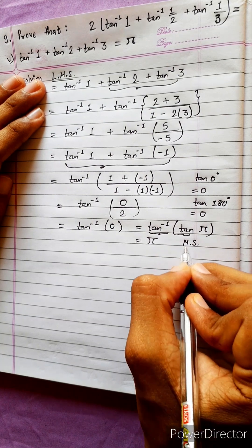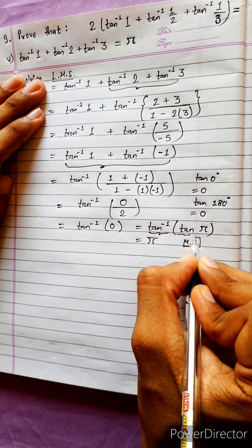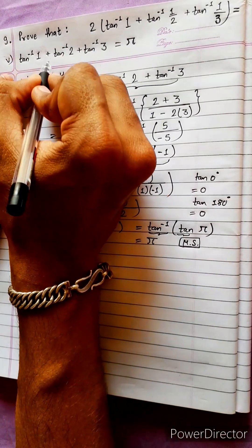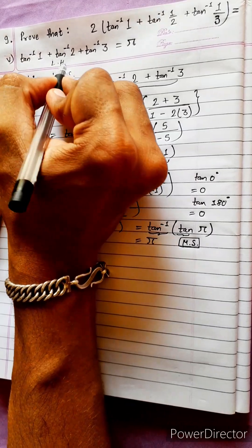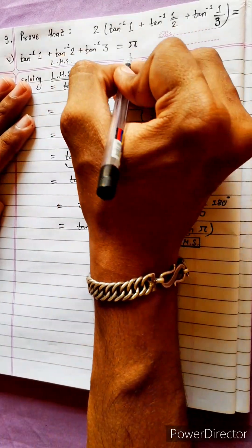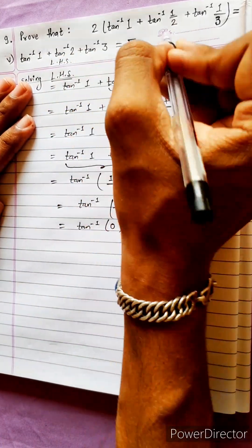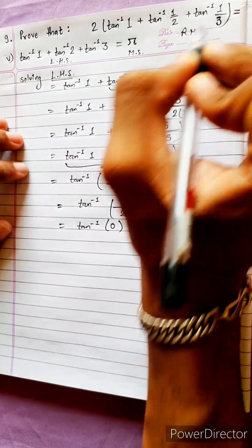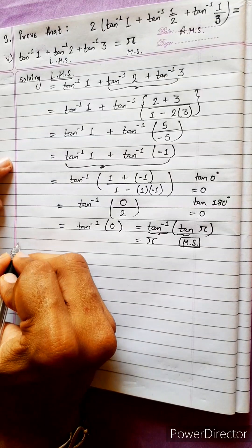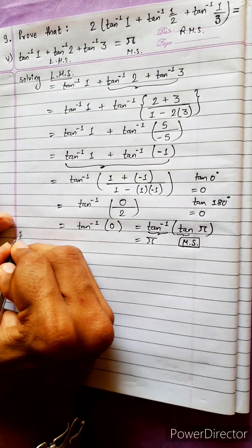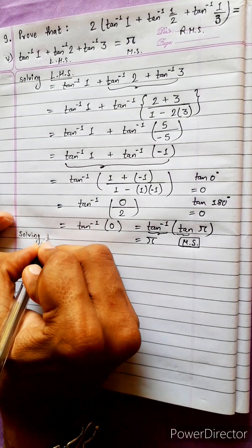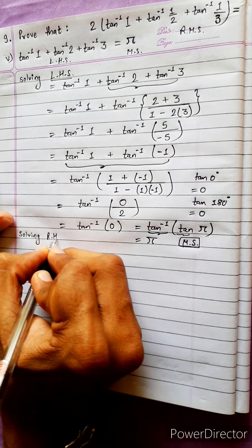The left hand side is this, the middle side is π, and this is the right hand side. Now solving the right hand side.